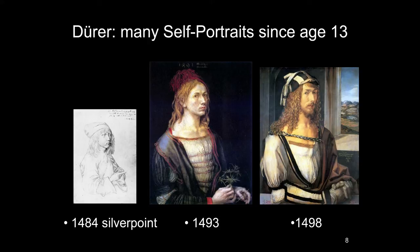All three self-portraits are in three-quarter view — the traditional way in northern painting. If you're doing a self-portrait, you have to be able to see yourself in a mirror, and doing a profile would be very difficult. The 1498 painting is shown in an interior with a window open to a landscape — a tradition with Netherlandish painters that he continues in German painting. Then we come to the self-portrait of 1500, in Munich in the Alte Pinakothek — a relatively small painting.